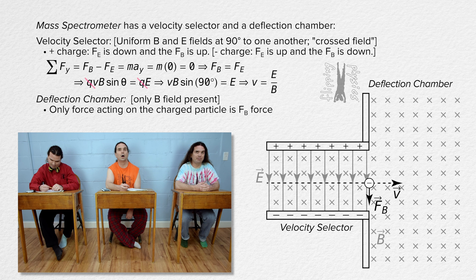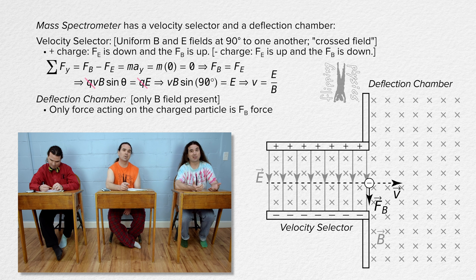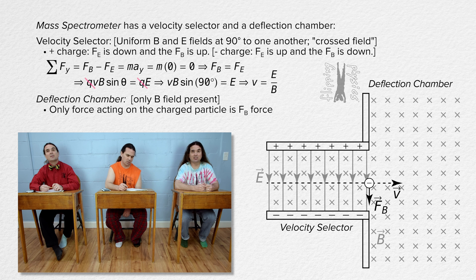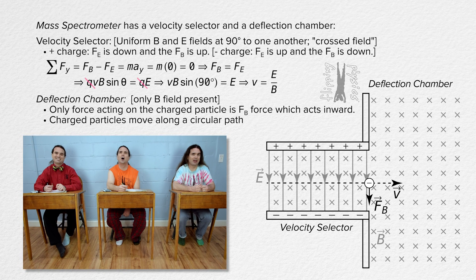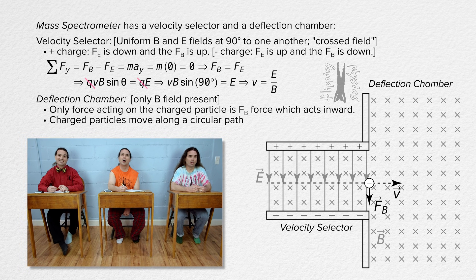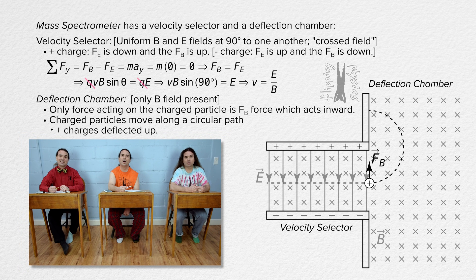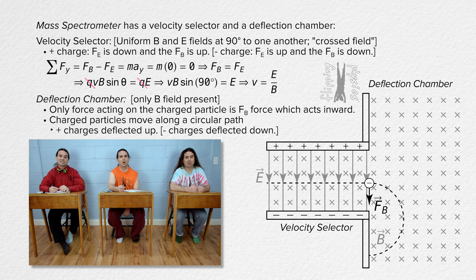We already figured that out. However, the charges will not move in straight lines in the deflection chamber. Because the magnetic force acting on each charge will always be perpendicular to the velocity of each charge, the charges will move in a circular path, with positive charges following an upward circular path and negative charges following a downward circular path.